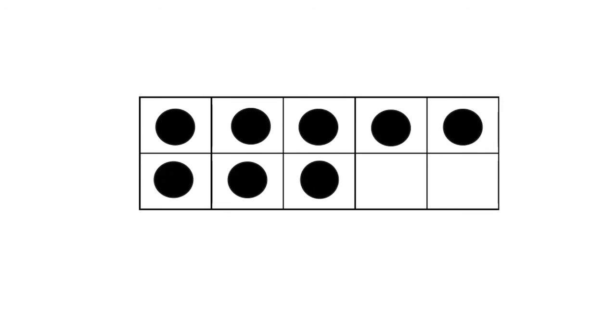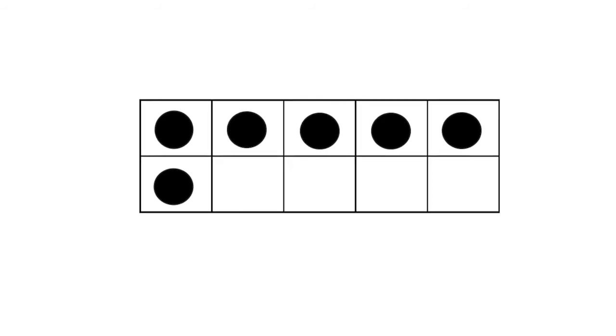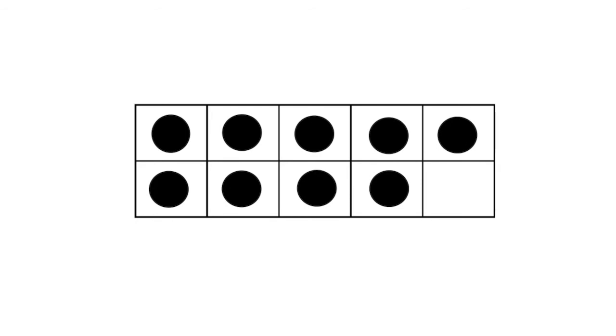But as you continue showing them different arrangements, such as this and this, they'll begin to notice patterns. They'll notice that each row always has 5 spaces. So if the top row is full, they don't have to count those. They'll simply start with 5 and count on from there: 6, 7, 8, 9.